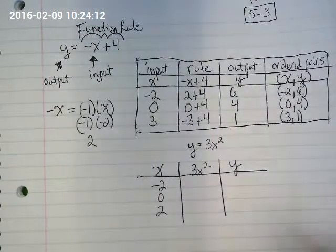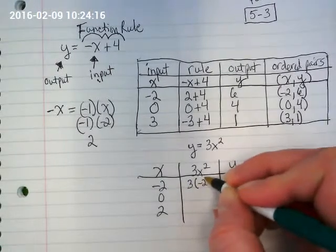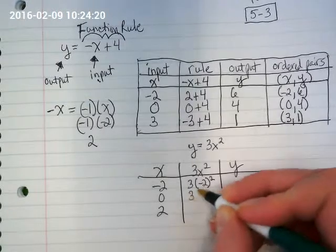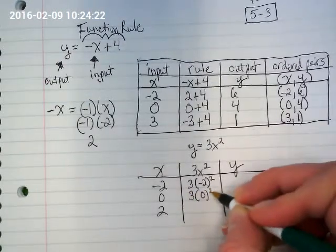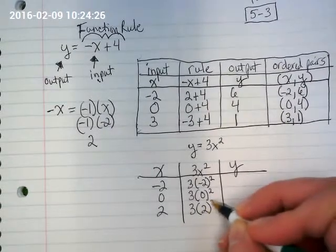Here's how I have to set this up. 3 times negative 2 squared, 3 times 0 squared, and 3 times 2 squared.